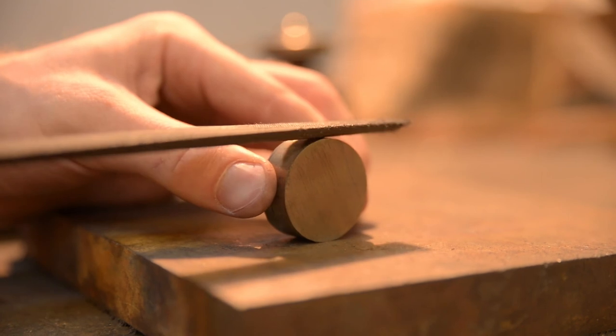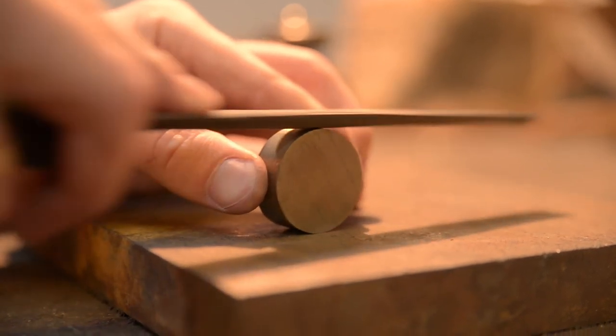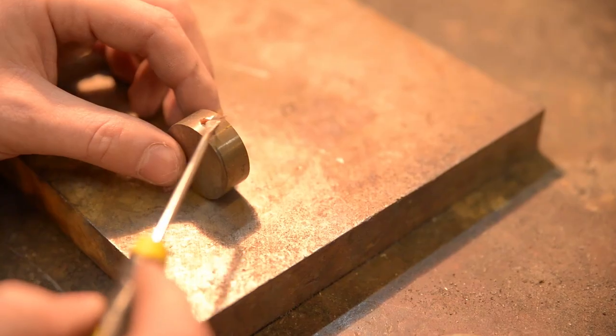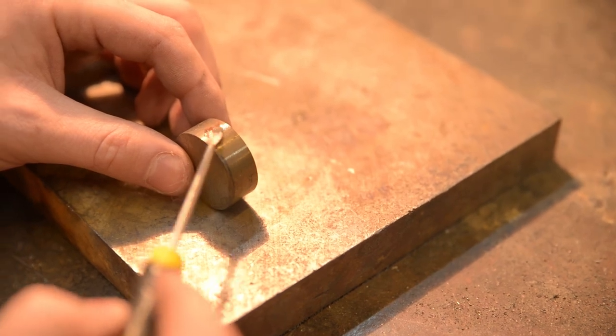In order to prepare the weight for soldering, I roughened up the surface a little with a file, then put on some flux, and finally a couple of pieces of solder.